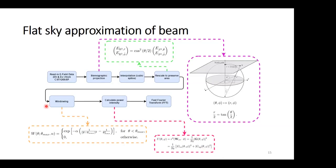This windowing specifically cuts out the far side lobes, so the flat sky approximation of the beam actually still holds.